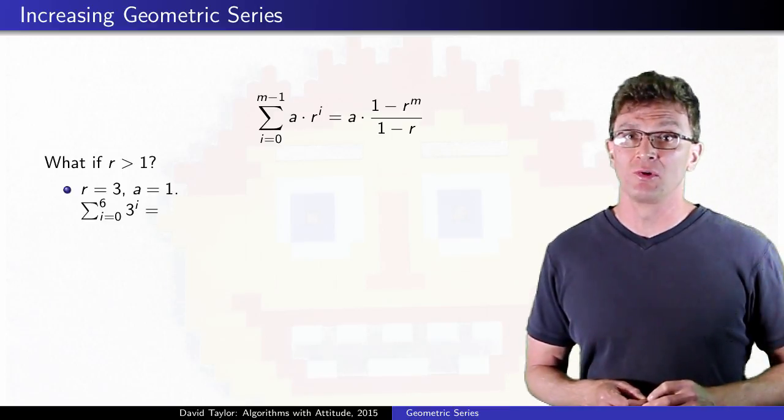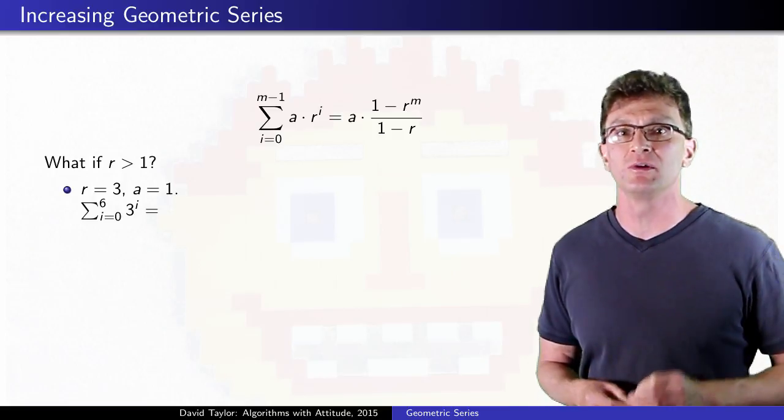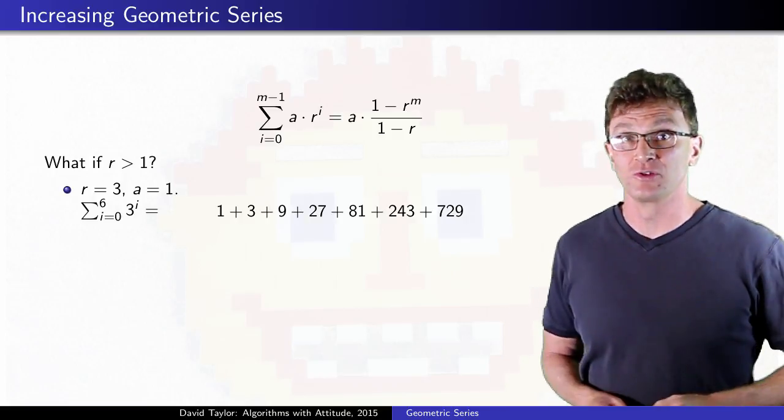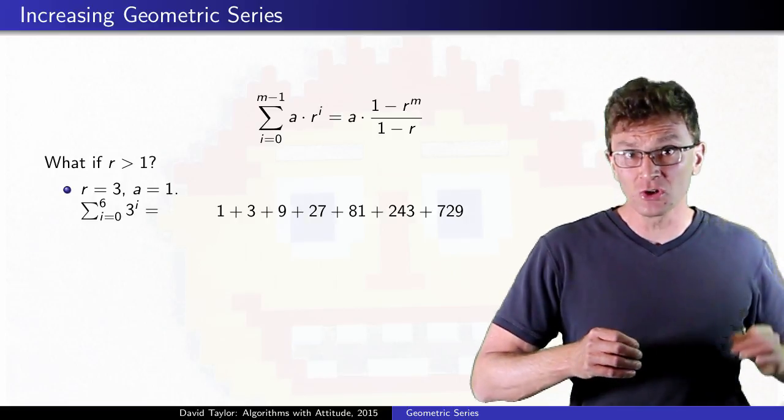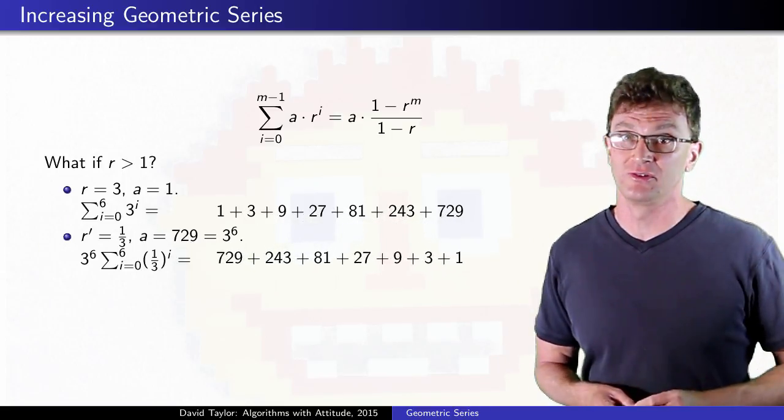If you look at the series the right way, you can see that there is no such thing as an increasing finite geometric series. Let's take this sequence for example. It looks like an increasing sequence, but if you look at it from the other side, it is a decreasing sequence.